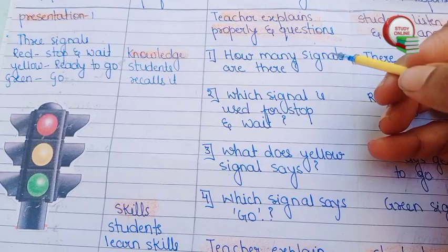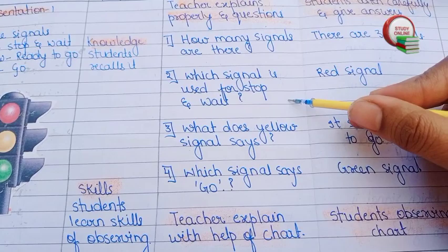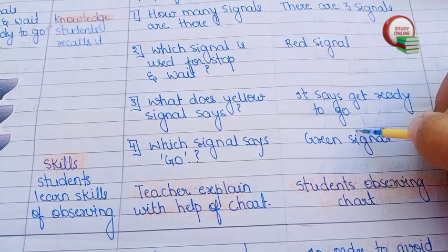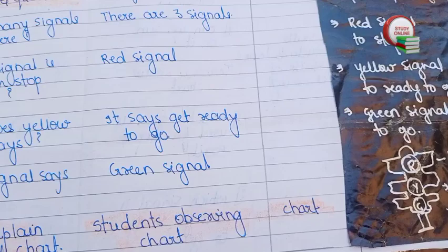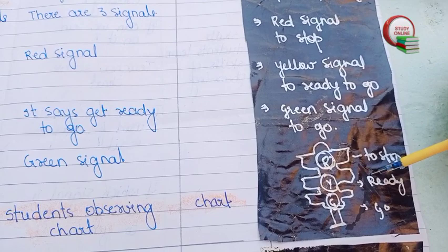After presenting, we have to ask questions related to that. How many signals are there? Students will answer: there are three signals. Which signal is used for stop and wait? Red signal. What does the yellow signal say? It says get ready to go. Which signal says go? Green signal. Here you can see the blackboard work — whatever we think is important, we have to write on the blackboard.